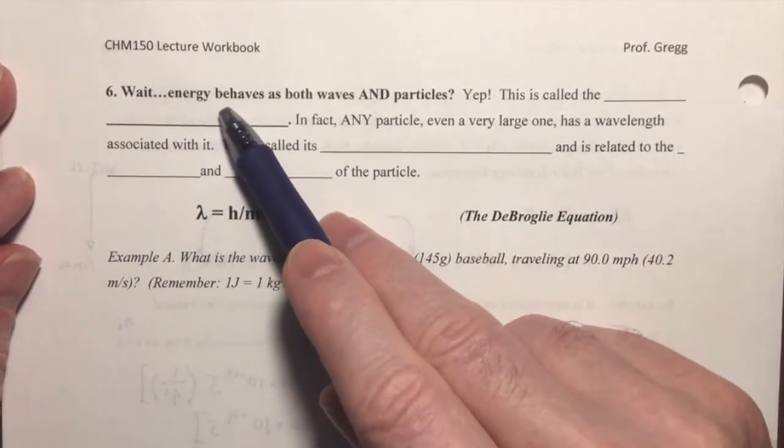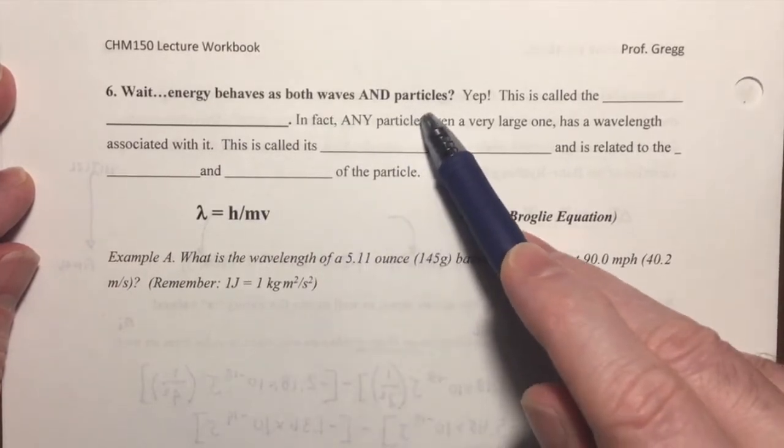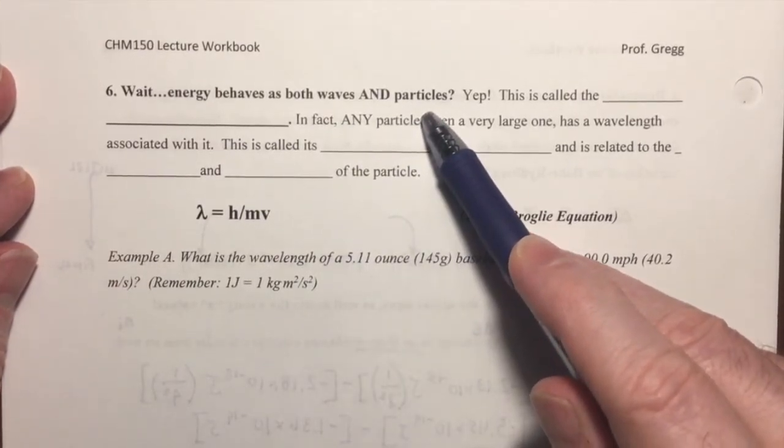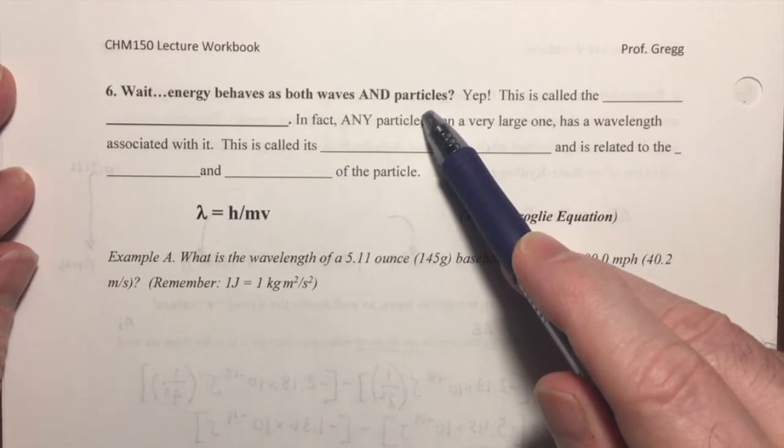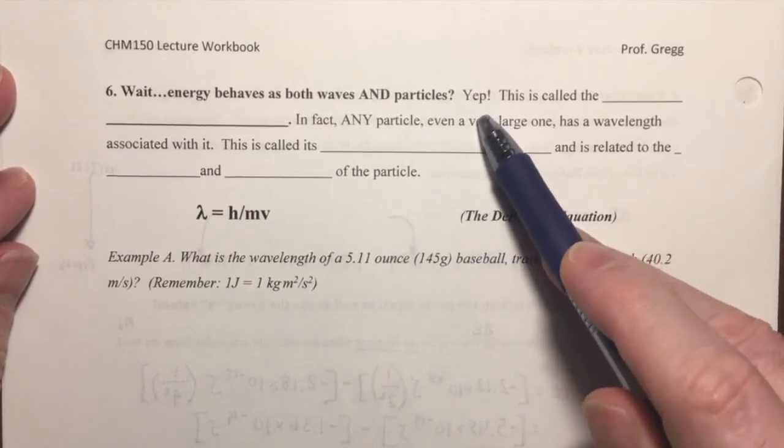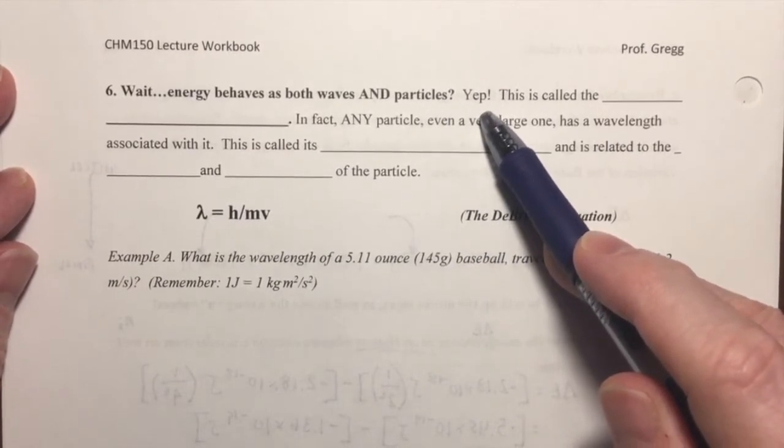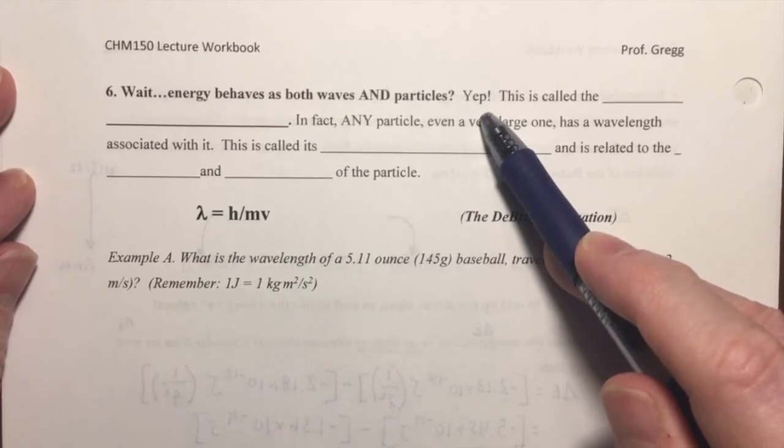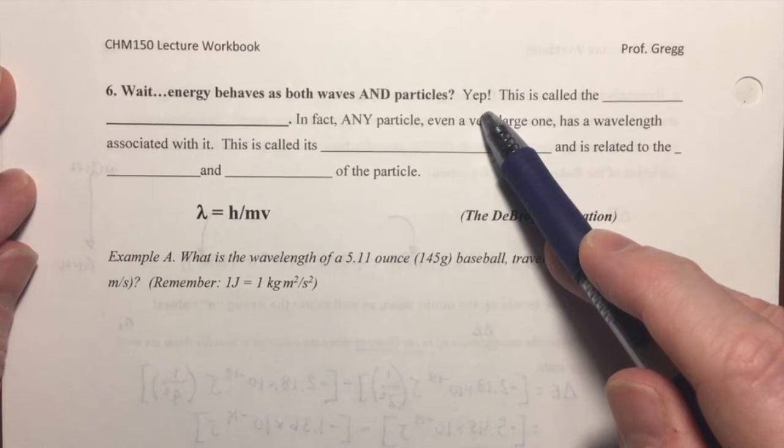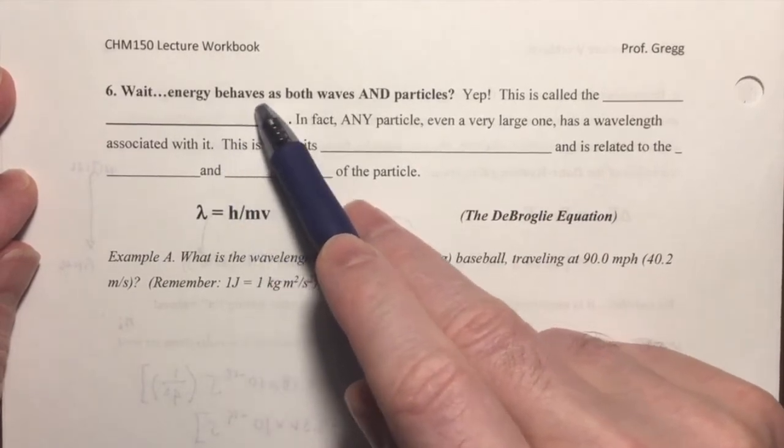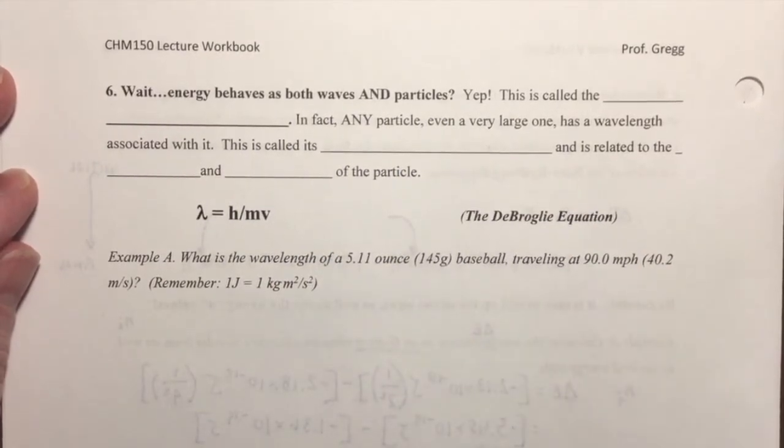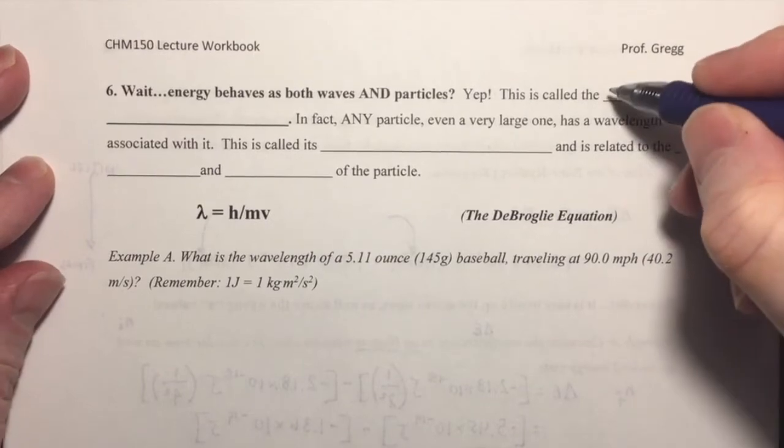Wait a minute. Energy behaves as both waves and particles? And we know that this has been a debate going on since the 1600s, right? And yes, it is true. Energy can be modeled both as waves and as particles. And both models have predictive value in being able to explain some of the experimental results that we see. So the idea that energy behaves as both waves and particles is called the wave particle duality.